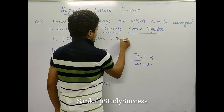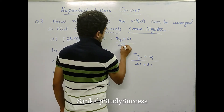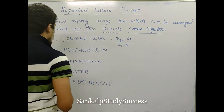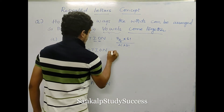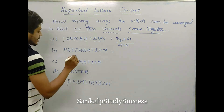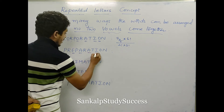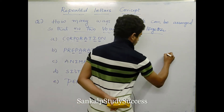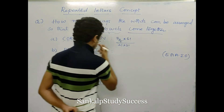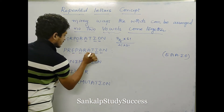The answer is 7P5 into 6 factorial divided by 2 factorial into 3 factorial. The next one is 'preparation.' First, identify the vowels: E, A, A, I, O. What are the consonants? P, R, P, R, T, N.